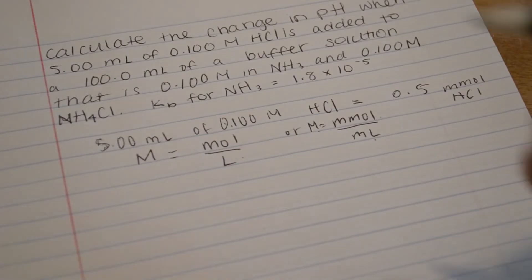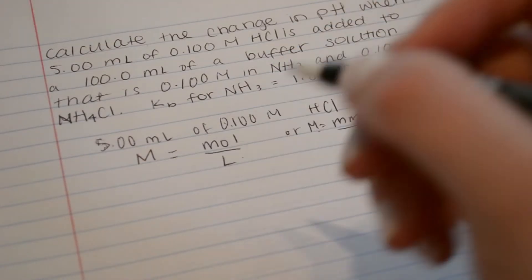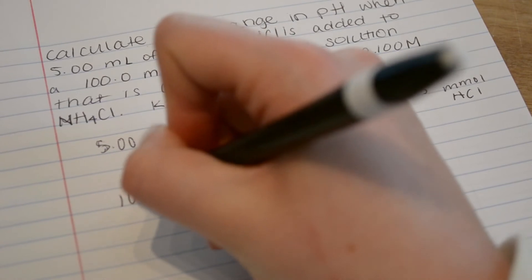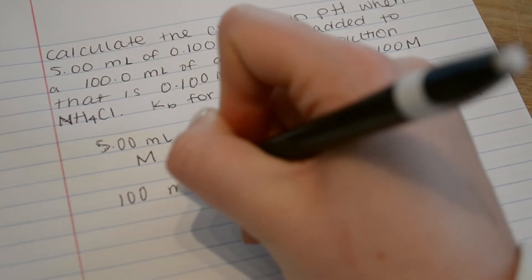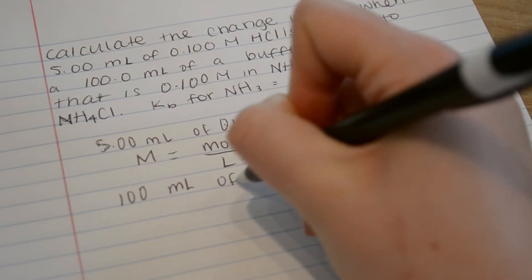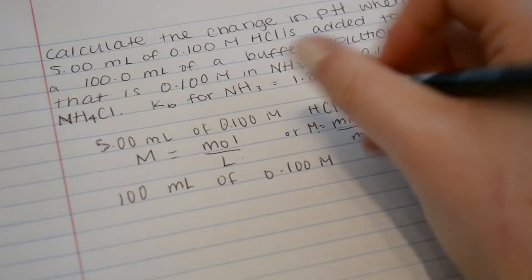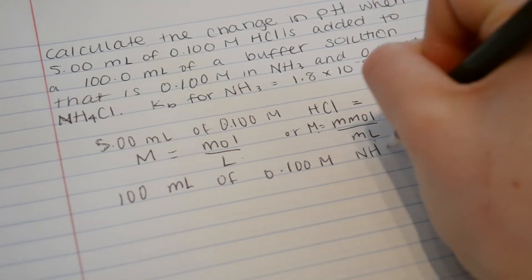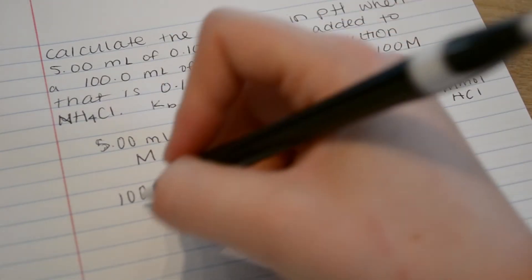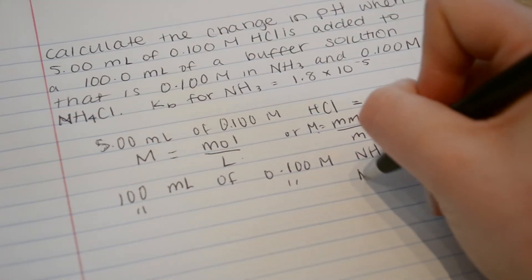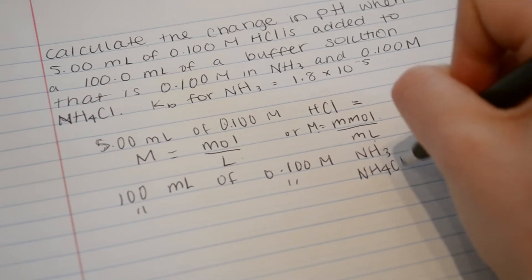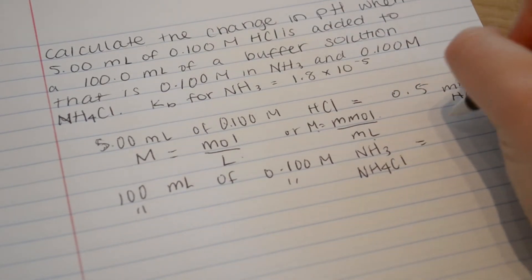And the next one is 100 milliliters of 0.1 molar of NH3 and the same for NH4Cl, which both equal 10 millimoles.